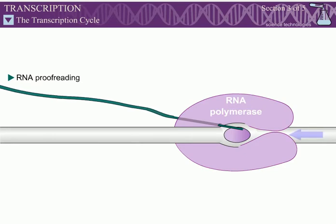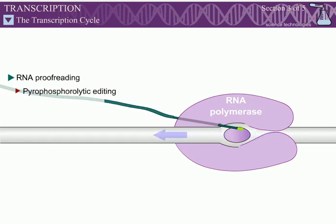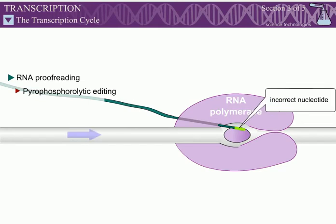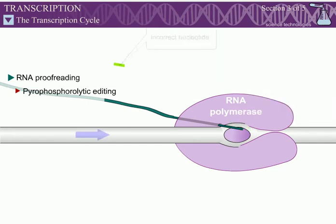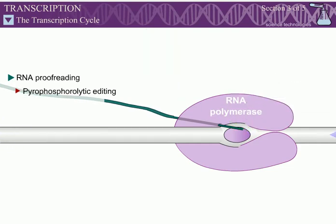RNA polymerase has two proofreading mechanisms. The first mechanism is called pyrophosphorolytic editing and involves a simple back reaction to catalyze the removal of an incorrectly inserted ribonucleotide. RNA polymerase slows down when an incorrect ribonucleotide is added, making removal of an incorrect base more likely than removal of a correct base.